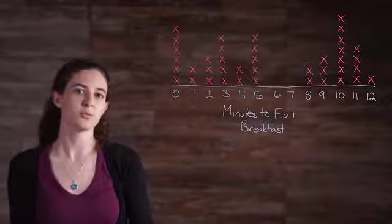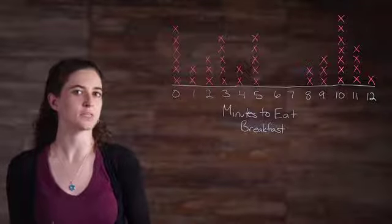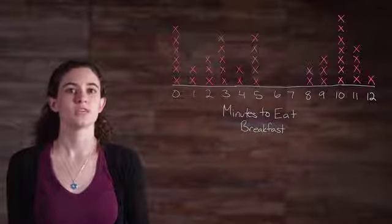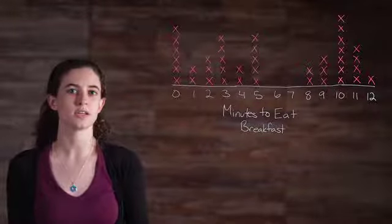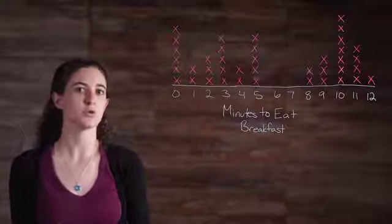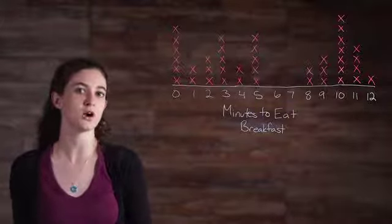We can also see that the number of people who take five minutes or less to eat breakfast is about the same as the number of people who take at least eight minutes. As you can see, using a line plot to organize data can simplify the interpretation of the data and reveal some important statistical concepts that you otherwise might have missed. I hope this review was helpful.